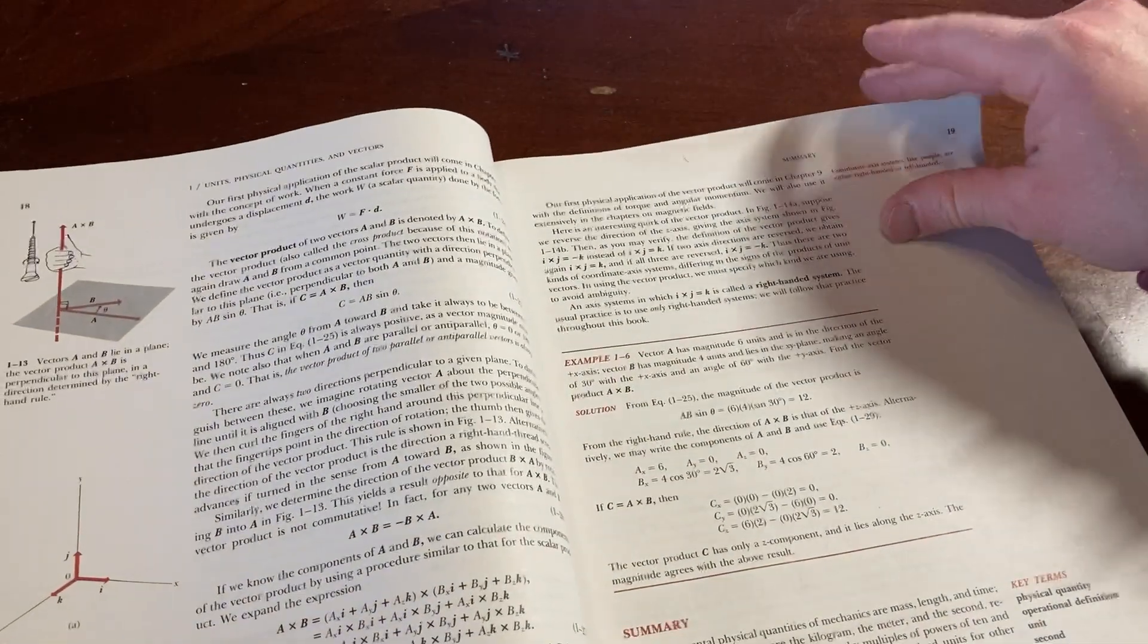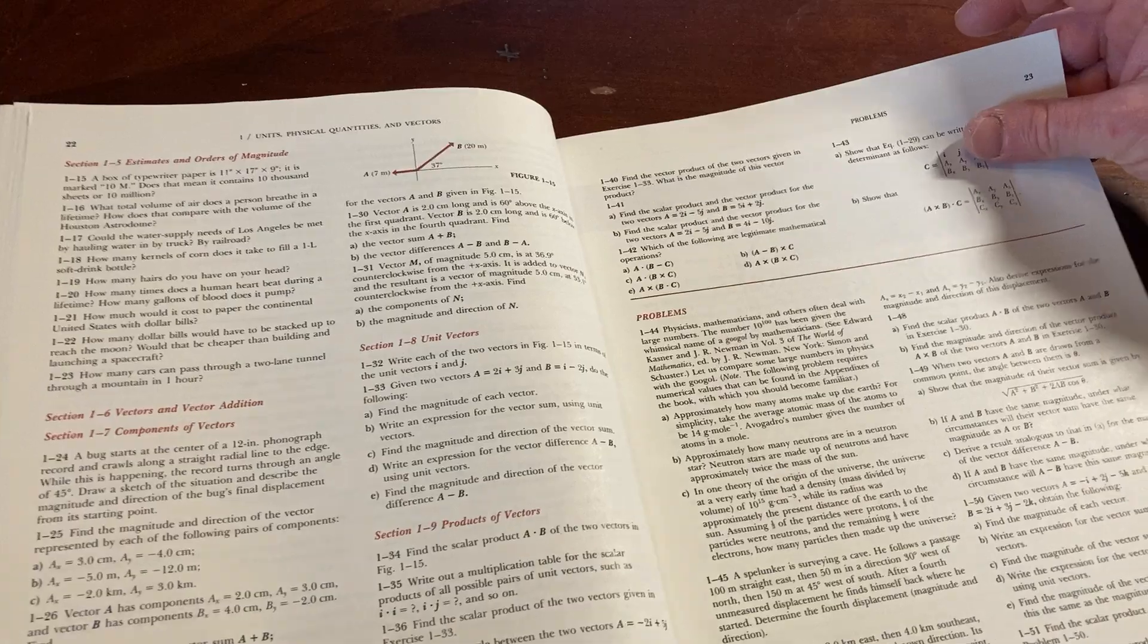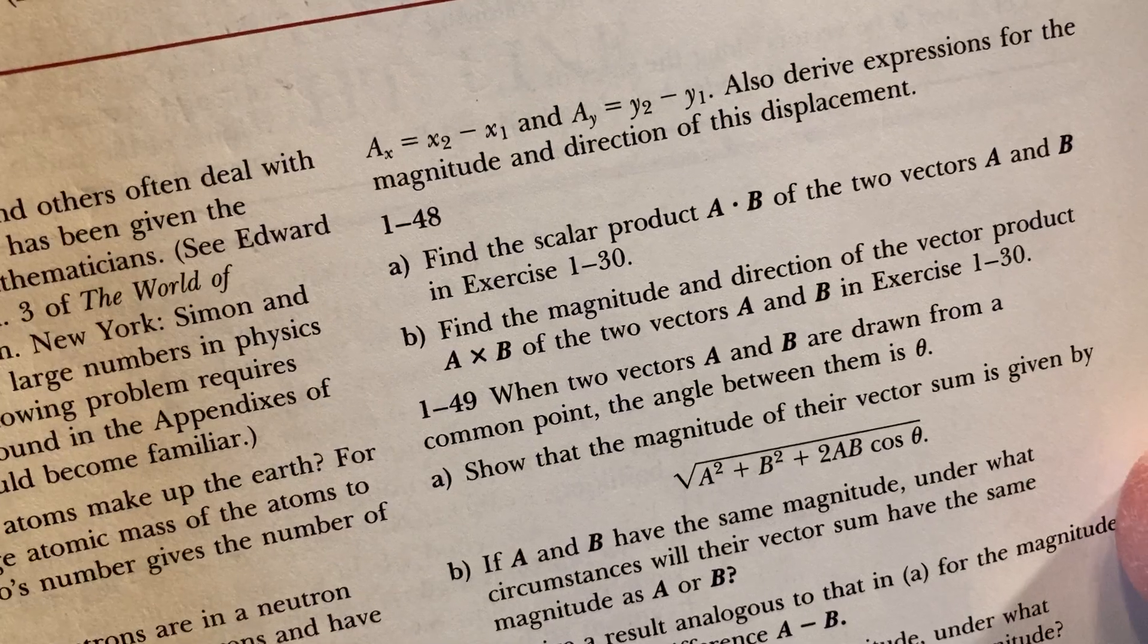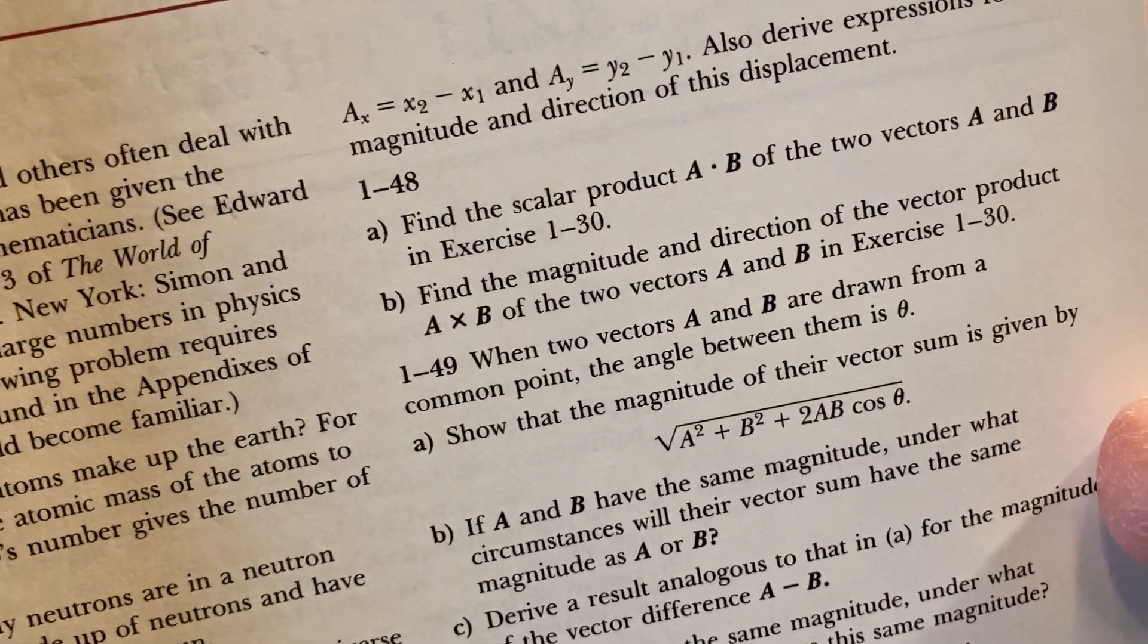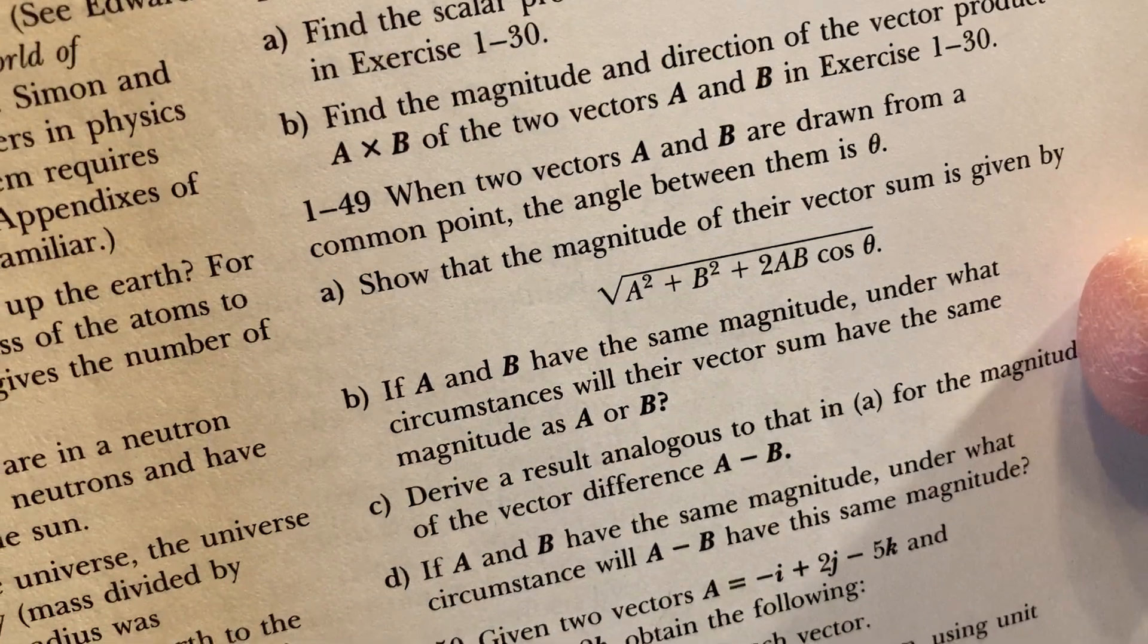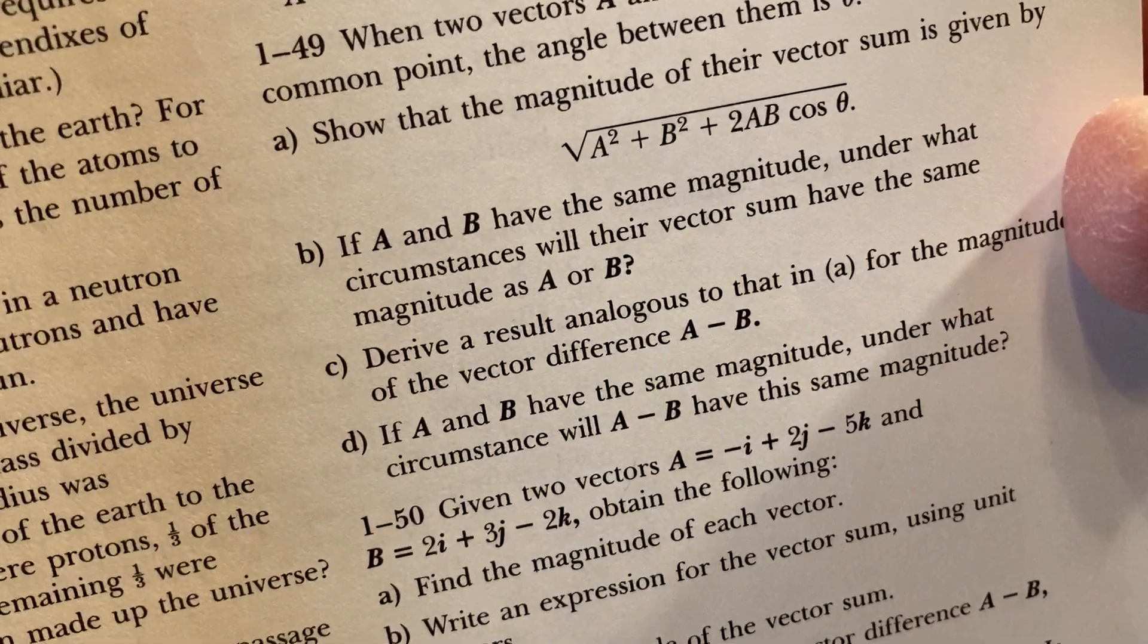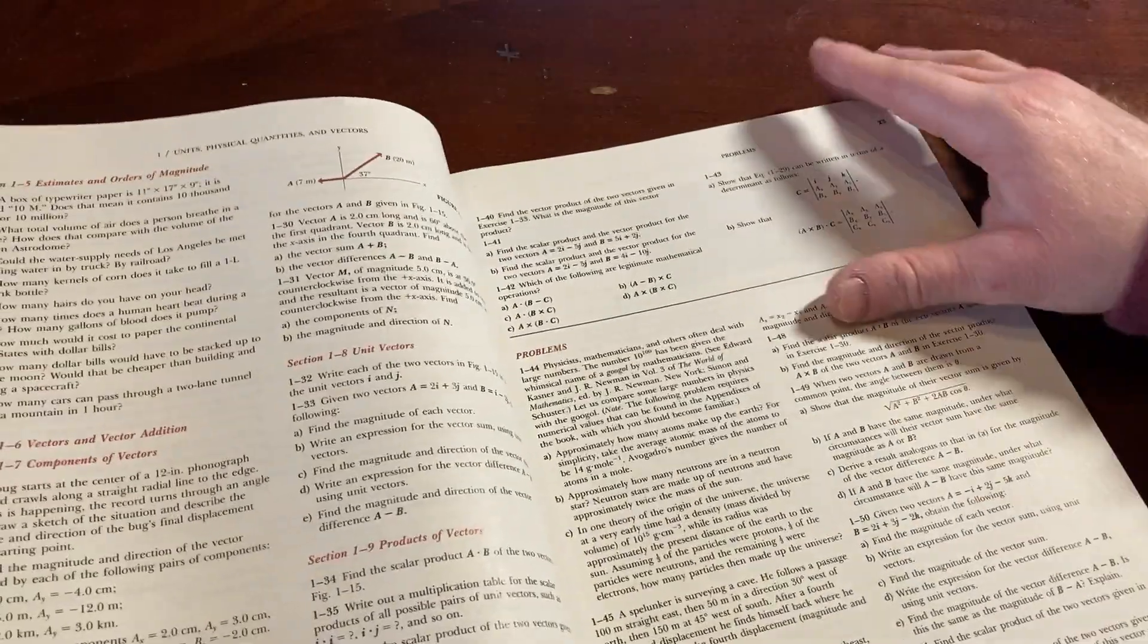So it's got a lot of mathematics and lots of exercises. Find the scalar product A dot B of two vectors A and B in exercise 130. Find the magnitude. If A and B have the same magnitude, under what circumstances will their vector sum have the same magnitude as A or B? A lot of questions to be answered.